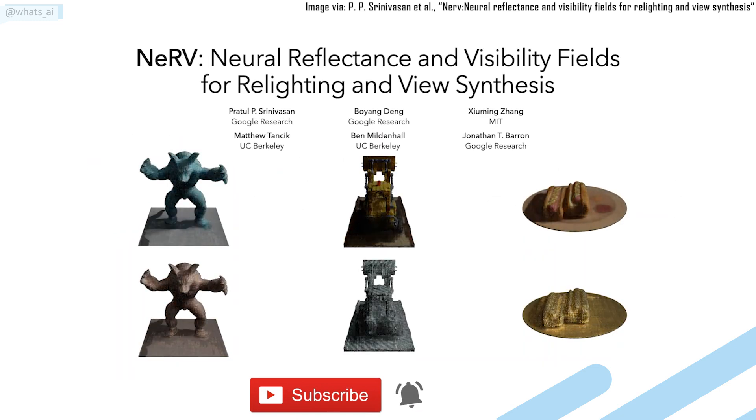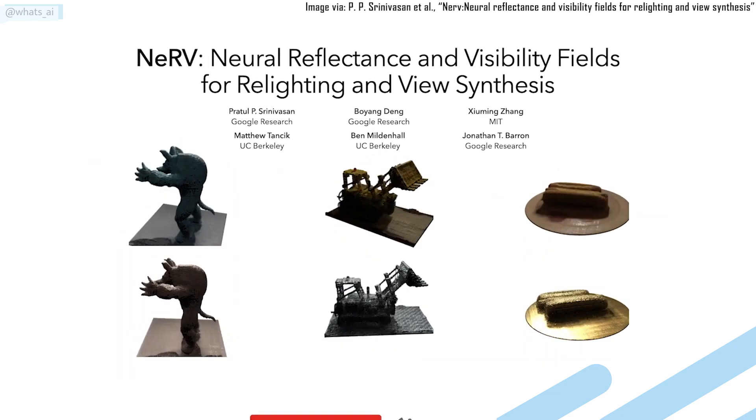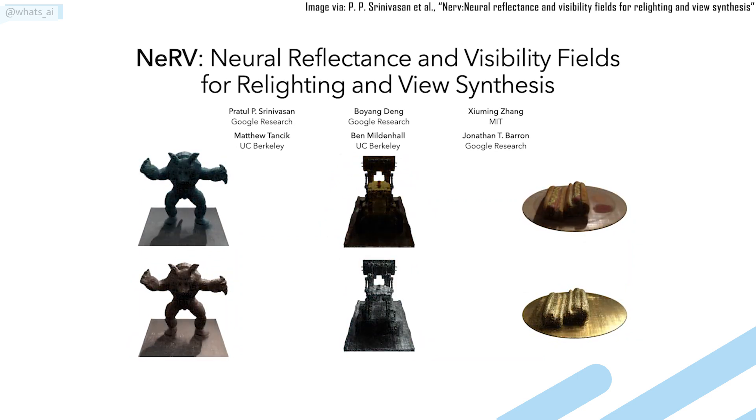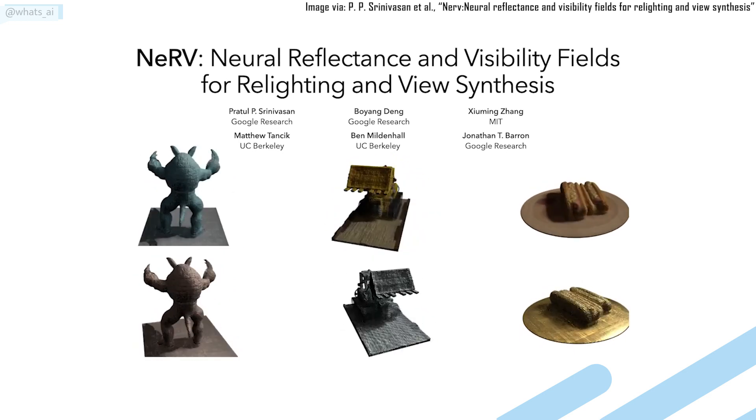NeRV, or Neural Reflectance and Visibility Fields for Relighting and View Synthesis, is a method that produces a three-dimensional representation of a scene and can generate arbitrary lighting conditions.